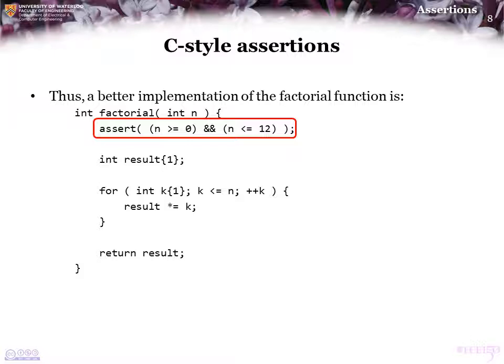So if anyone accidentally calls the factorial function with an argument 13 or greater, rather than returning the wrong result, the program will return an error.